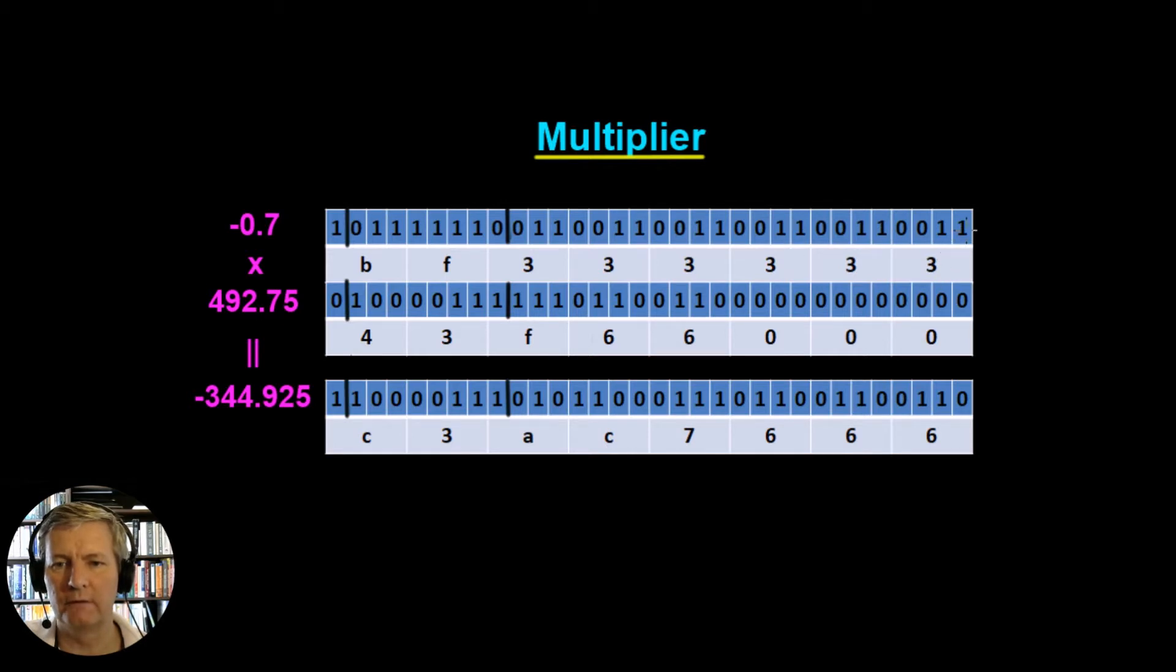The four bits here is going to give us the binary number 3, and then the next four bits is the binary number 3, 3, 3, 3, 3. These four bits here are going to give us the F and this is going to give us a B here.